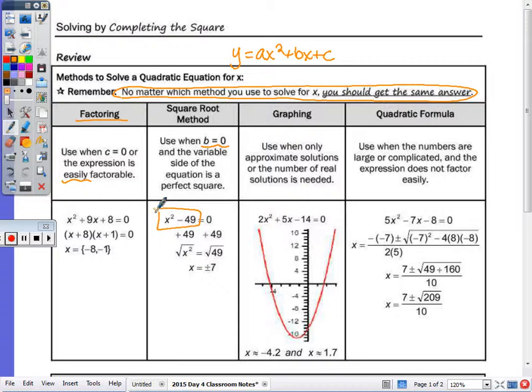By graphing, you only want to use that when you're looking for approximate solutions or the number of real solutions is needed. Otherwise, you can solve using one of the other methods, but you can also check by graphing. You only want to solve by graphing really when it tells you to.